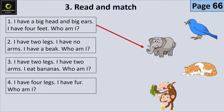I have two legs — لدي قدمان. I have no arms — ليس لدي زراعان. I eat bananas — أكل الموز. Who am I? A monkey.